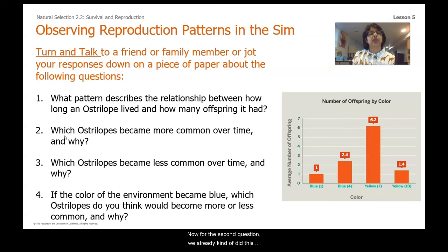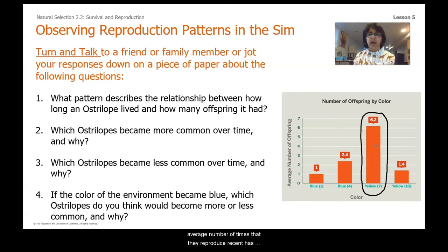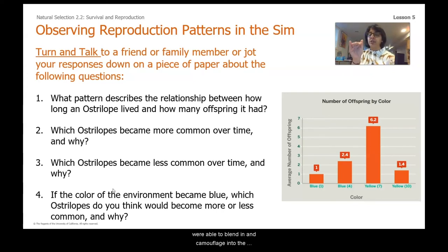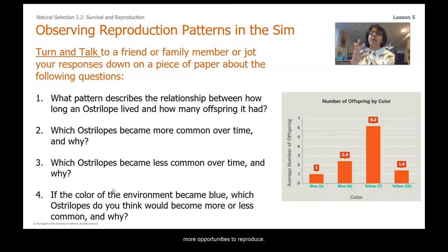For the second question — which australobes became more common over time and why? Those were the australobes with a yellow color of seven, which had the highest average number of times they reproduced and thus the higher average number of offspring. Why? Because those australobes were able to blend in and camouflage into the environment. In our simulation, the environment was a color level of seven, so australobes with that same color blended in more and escaped the carnathons for longer, giving them more opportunities to reproduce.